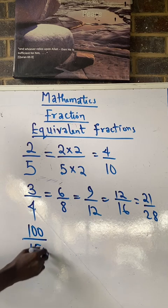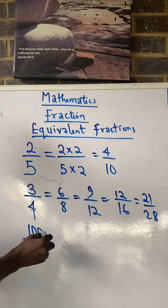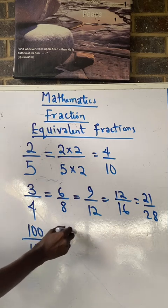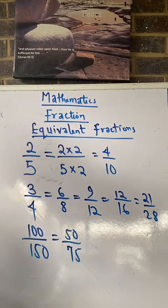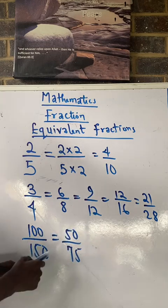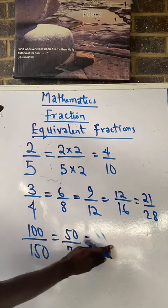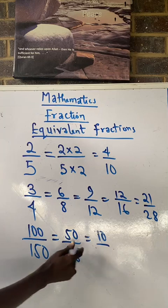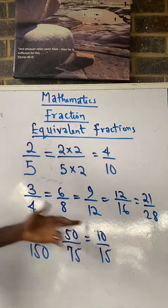What if we have one hundred over one hundred and fifty? If we divide both by the same number, we still get an equivalent fraction. Divide both by two: one hundred divided by two gives me fifty, one hundred and fifty divided by two gives me seventy-five — still equivalent. Divide again by five: you get ten over fifteen.